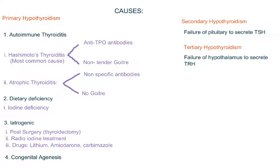The second cause is iodine deficiency. Iodine is required for the synthesis of thyroid hormones, so its deficiency may lead to hypothyroidism. It is seen in people who live in mountainous regions where food is grown in iodine-poor soil. The third cause is iatrogenic — that is, after medical treatment like post-surgery of the thyroid gland, radioactive iodine treatment, or after some drugs like lithium, amiodarone, and carbimazole.